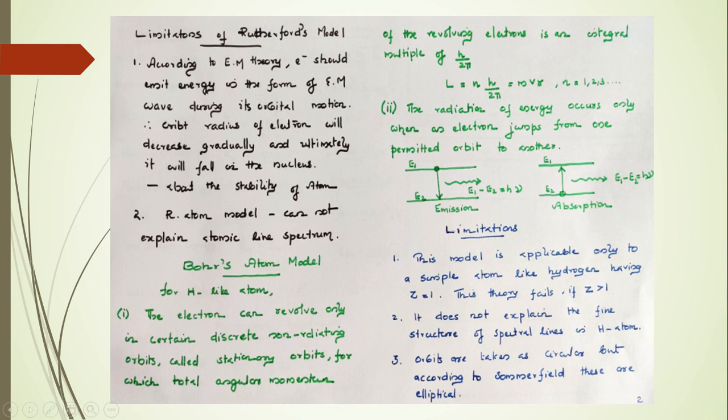The limitations of Rutherford model: according to electromagnetic theory, the electrons should emit energy in the form of electromagnetic wave during its orbital motion. Therefore, the orbit radius of the electron will decrease gradually and ultimately it will fall in the nucleus. There is a question about the stability of the atom. The Rutherford atom model cannot explain the atomic line spectrum.